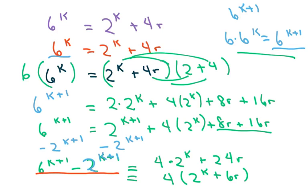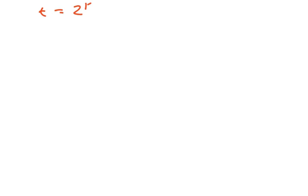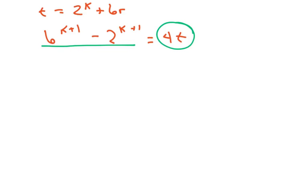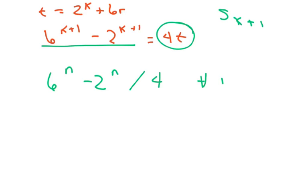So now we have this side matching, which is our desired result. We're going to let t equal 2^k plus 6r. So we have 6^(k+1) minus 2^(k+1) equals 4t. Since this is divisible by 4, we have shown that s of n is valid when s sub k plus 1 is also valid. Hence, 6 to the nth power minus 2 to the nth power is divisible by 4 for all positive integers n. And that's all — thank you, have a nice day!